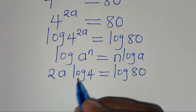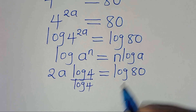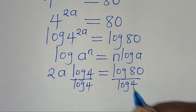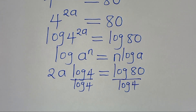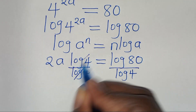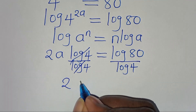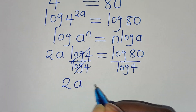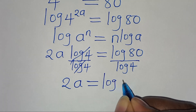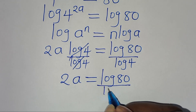The next step is to divide both sides by log 4. Simplifying, log 4 and log 4 cancel, so we have 2a equals log 80 divided by log 4.